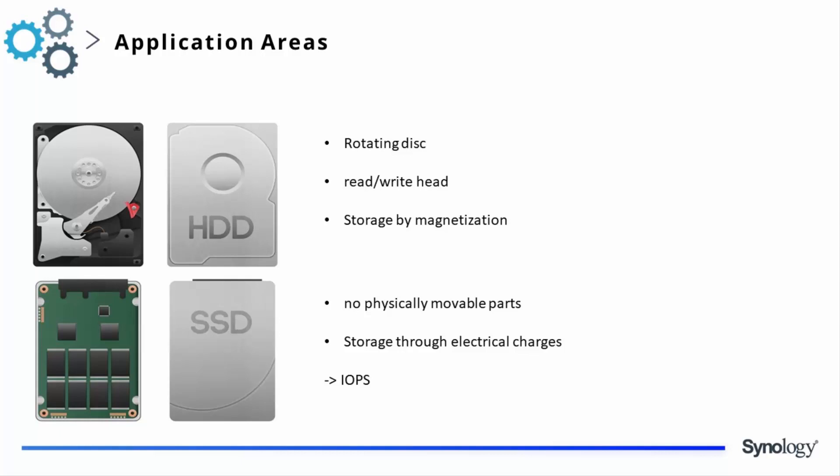Bad sectors in the long run lead to data loss. SSD memory, on the other hand, does not operate this way — there are no physical moving parts during operation. However, it is important to emphasize that SSDs do have their own lifespan. SSDs work on a cell basis, and there are three SSD cell types available.